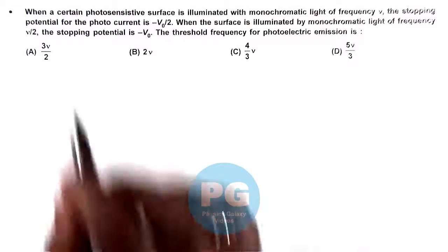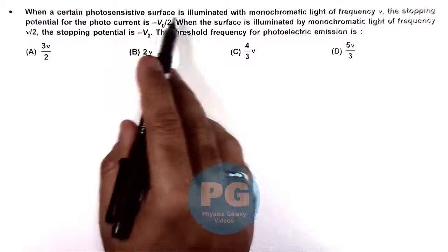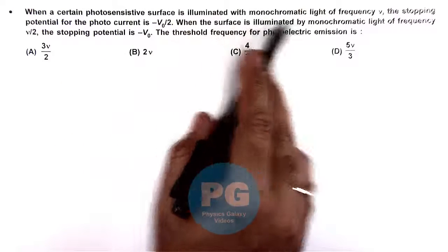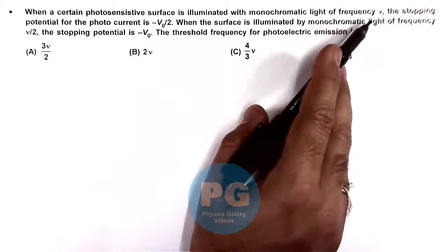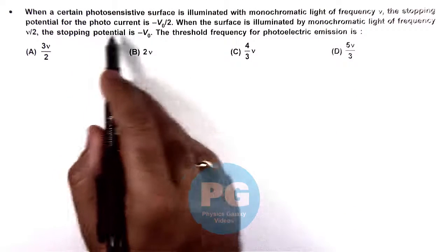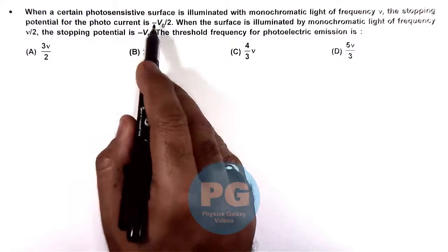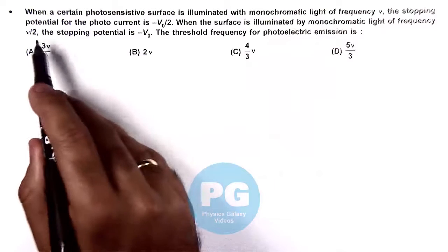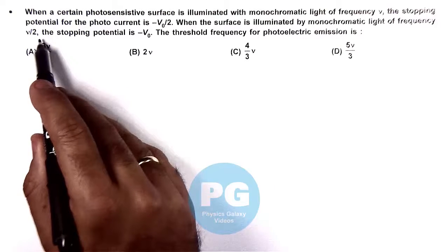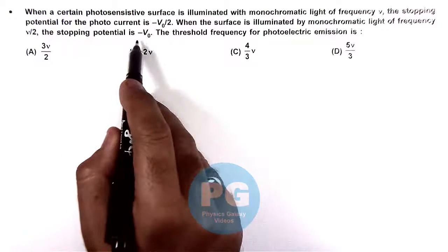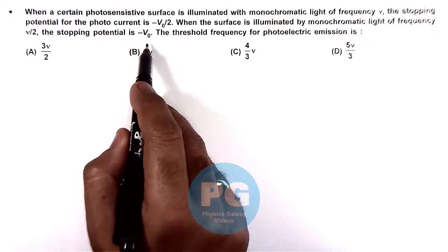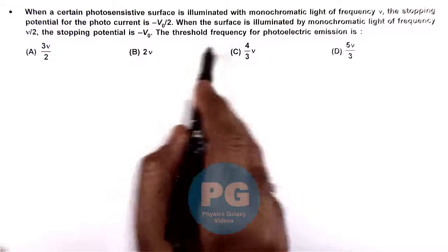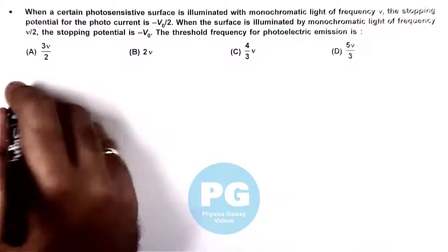In this question, when a certain photosensitive surface is illuminated with monochromatic light of frequency nu, the stopping potential for the photocurrent is minus V-not by 2. When the surface is illuminated by monochromatic light of frequency nu by 2, the stopping potential becomes minus V-not. We're asked to calculate the threshold frequency for the photoelectric emission.